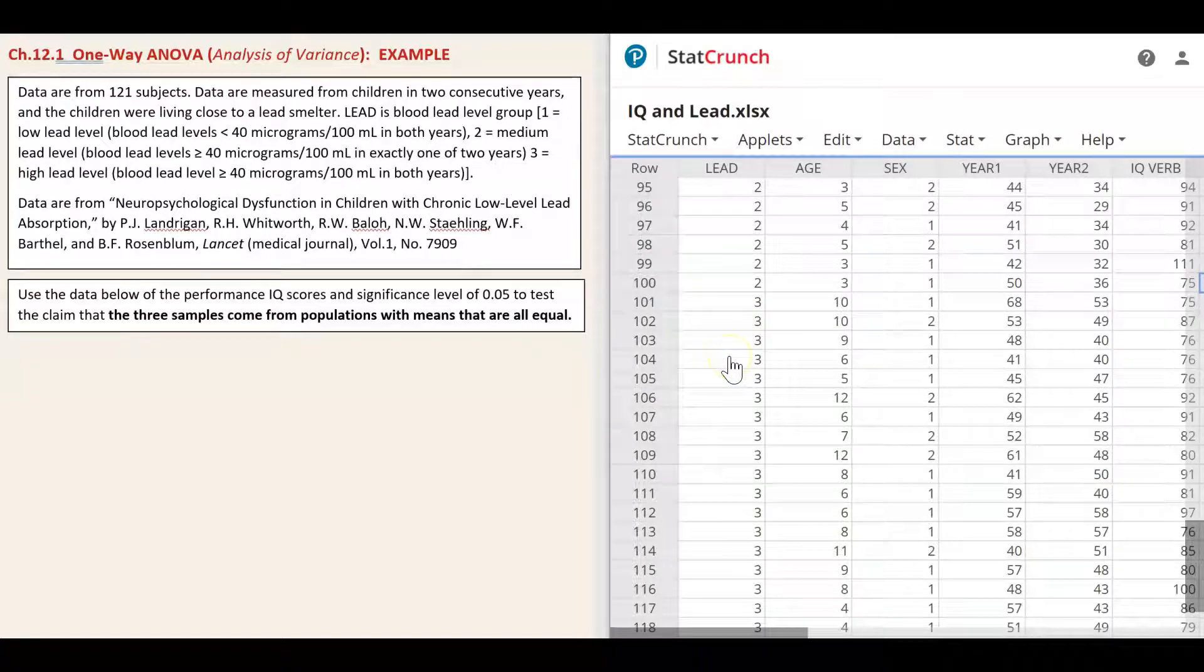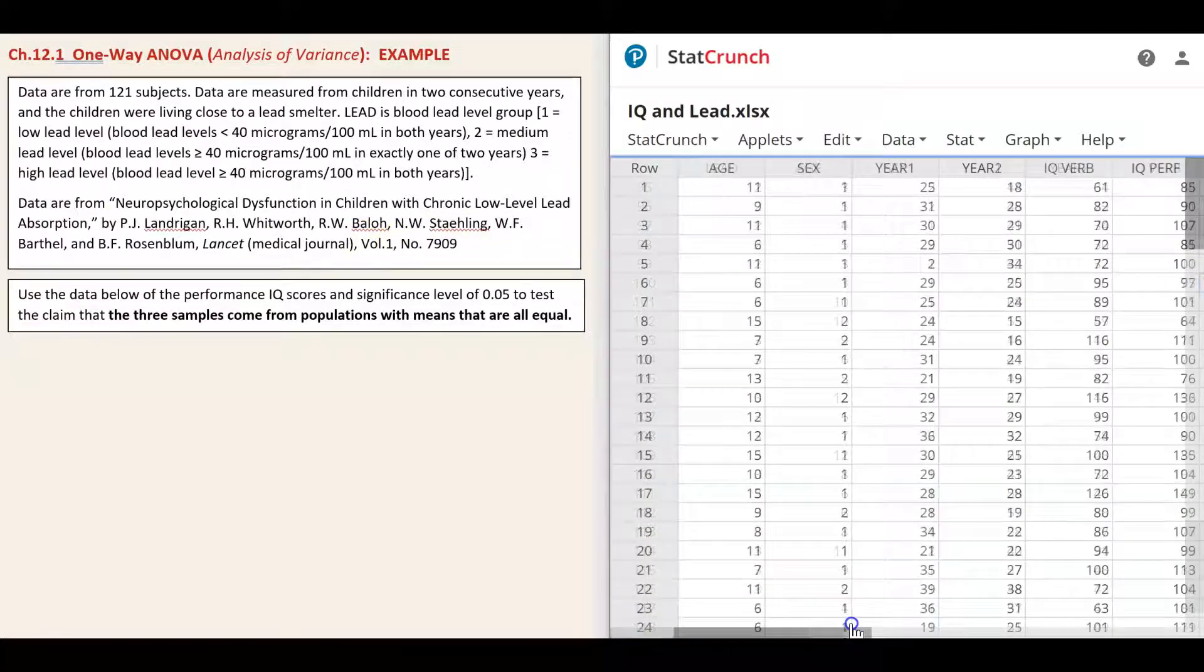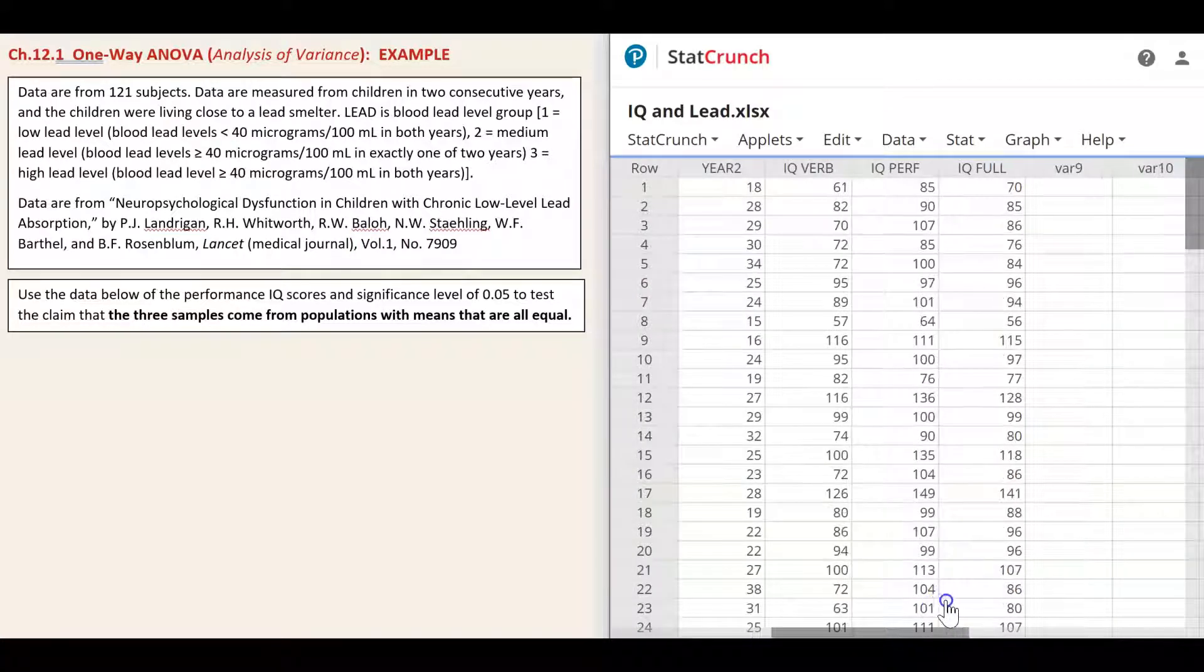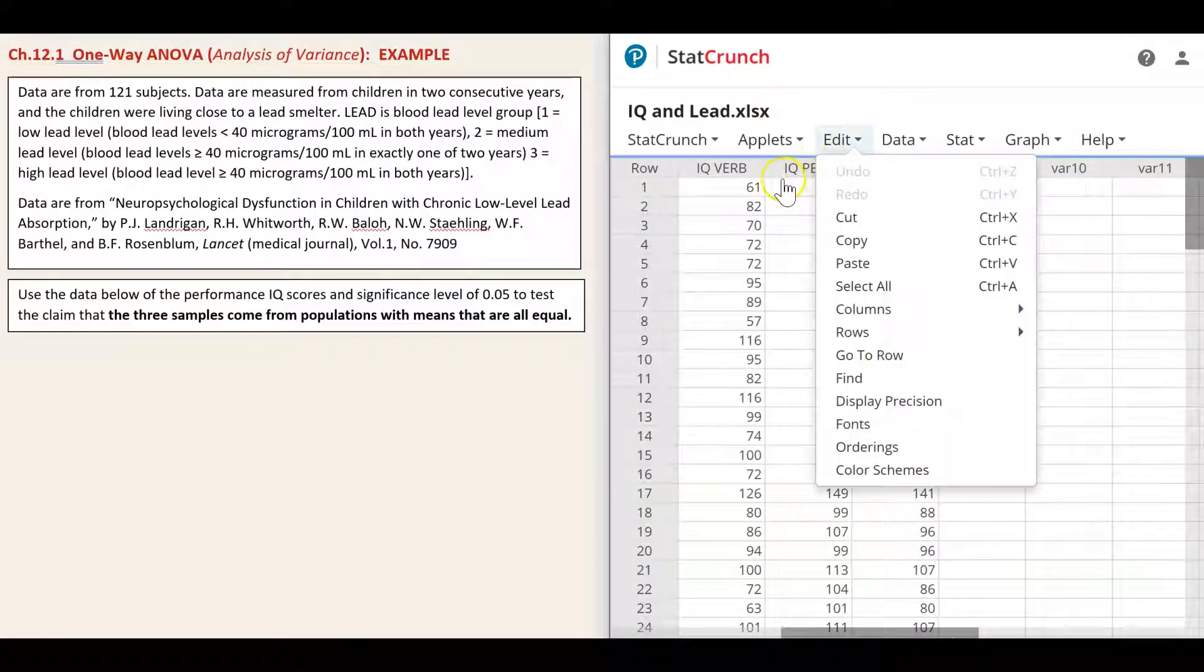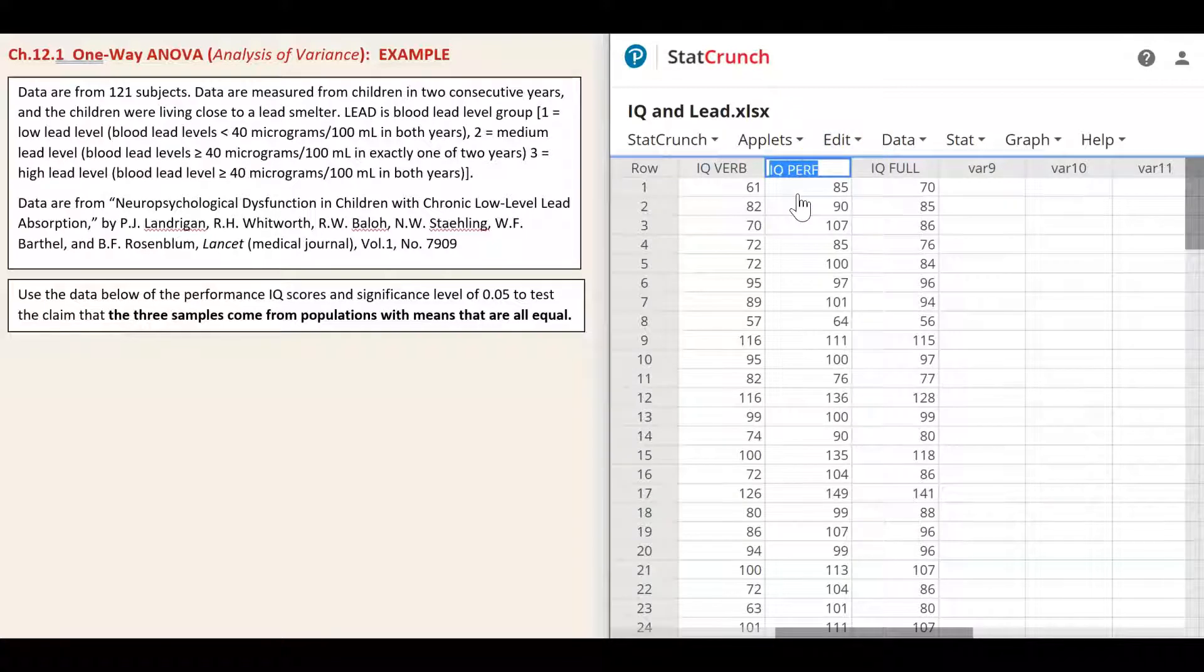And three equals high blood lead level: greater or equal 40 micrograms per 100 milliliter in both years. Data are from neuropsychological dysfunction in children with chronic low level lead absorption by these authors, published in Lancet medical journal volume one number 7909. We will use this data of the performance IQ scores in the column IQ performance and significance level of alpha equals 0.05 to test the claim that the three samples come from populations with means that are all equal.